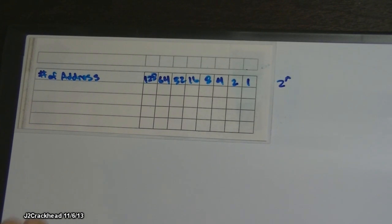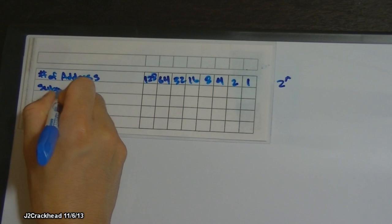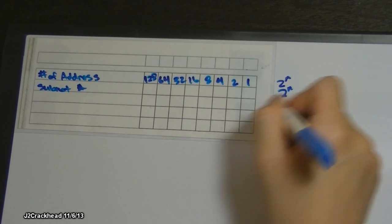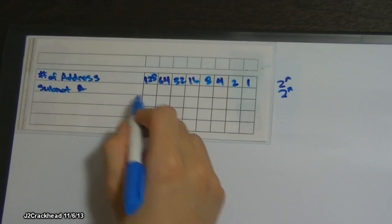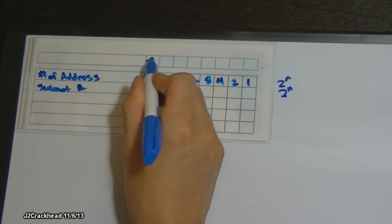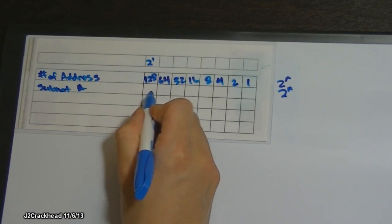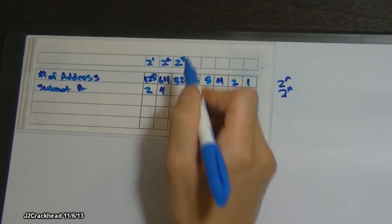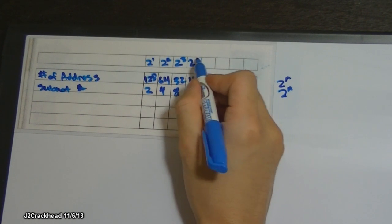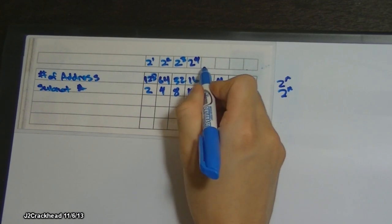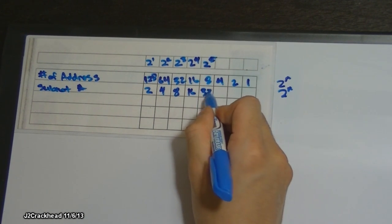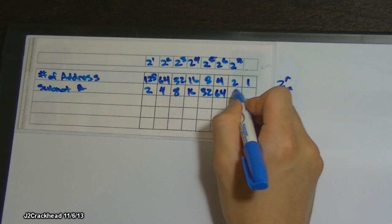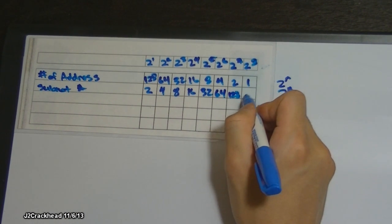The next thing I need will be the subnet numbers. To get this, I'll be using the same equation — 2 to the n power — but this time starting from the left side, and starting from 2^1: 2^1 = 2, 2^2 = 4, 2^3 = 8, 2^4 = 16, 2^5 = 32, 2^6 = 64, 2^7 = 128, and 2^8 = 256.